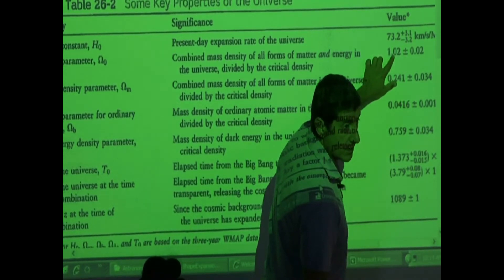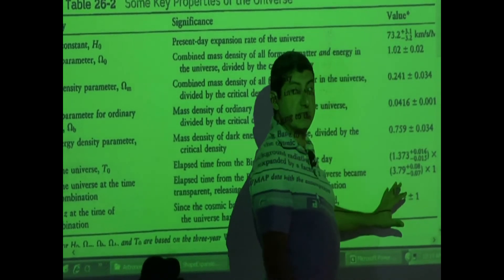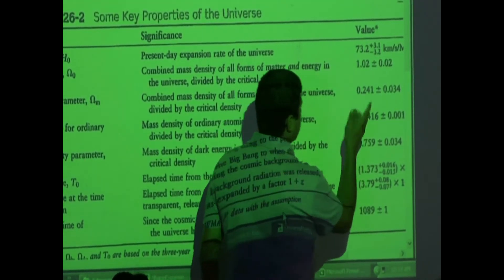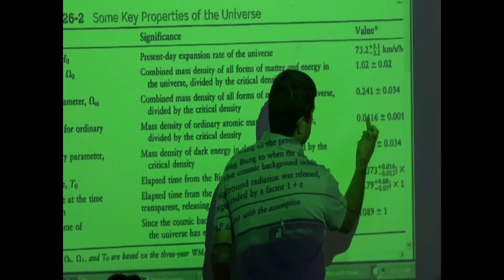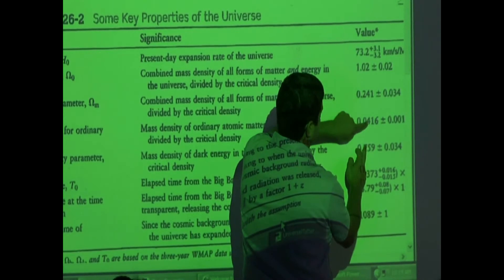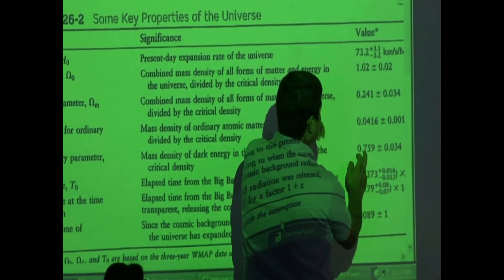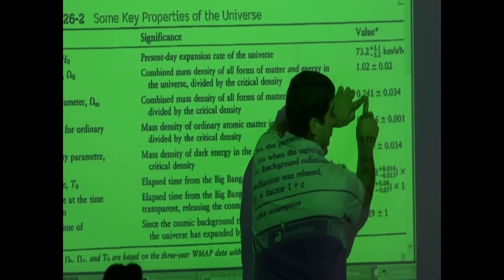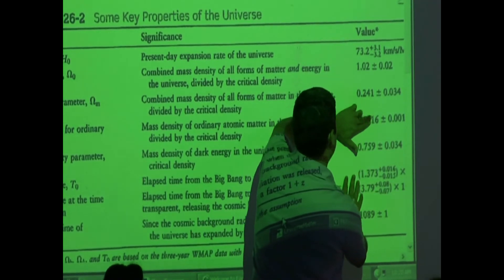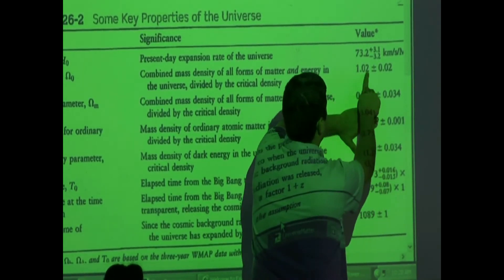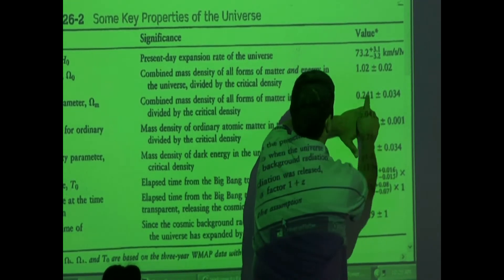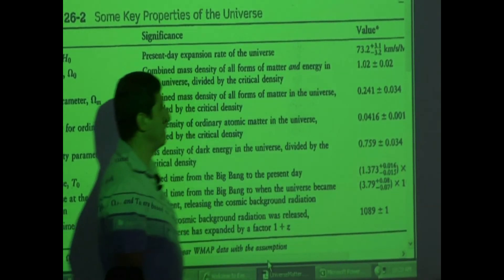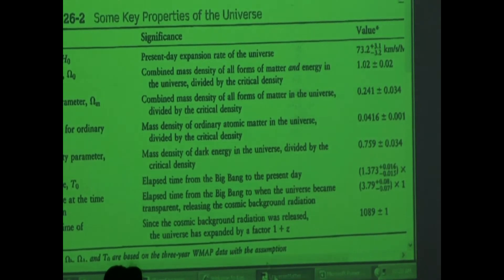These numbers have been updated since this data table, so if you go online you'll see slightly different numbers, but no matter what, they must all add up. Note that the 4% ordinary matter is part of the 24% total matter. So 76% dark energy plus 24% matter equals 100%, and of that 24%, only 4% is ordinary matter. That's the way those numbers work.